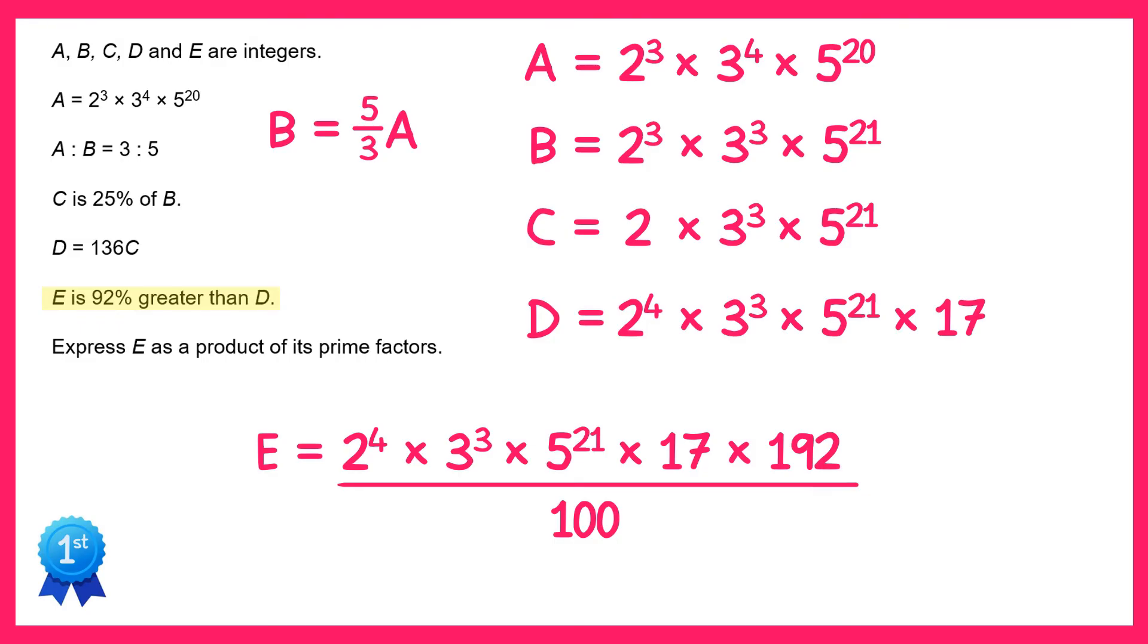Now let's prime factorize 100. That's 2 squared times 5 squared. And we could actually cancel out the denominator here by reducing the numerator powers of 2 and 5 by 2. So let's remove this denominator and on the top the power of 2 and 5 will decrease by 2. So 2 to the 4 becomes 2 squared and 5 to the 21 becomes 5 to the 19.